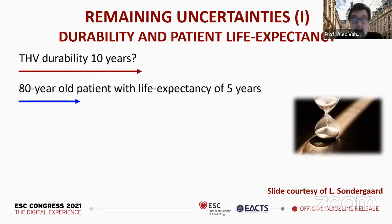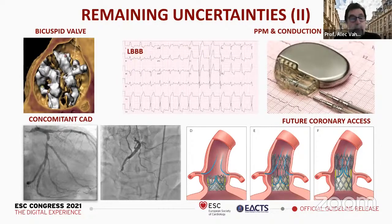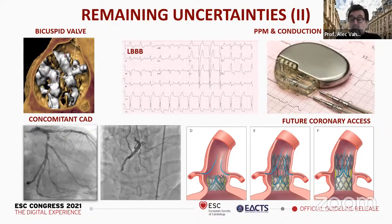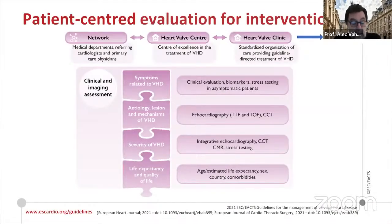Other open questions for TAVI include: bicuspid valve data accumulating but needing randomized trials; consequences of left bundle branch block after the procedure; pacemaker risk being especially problematic in young patients; need for more data on concomitant coronary artery disease and future coronary access despite current refinements. Coming back to the central figure of the guideline, evaluation should be patient-centered — we should choose what is best for the patient, not operate simply because we are a surgeon or do TAVI because intervention is available.